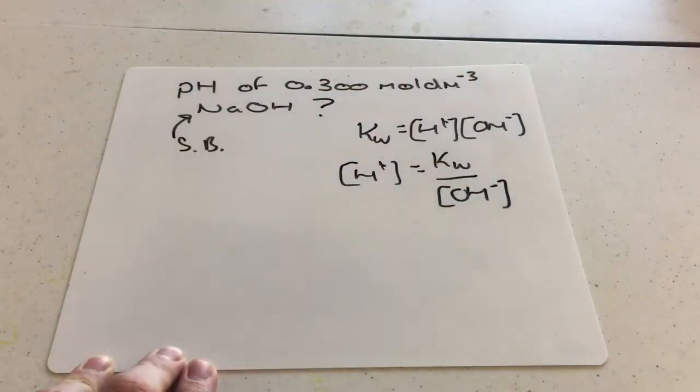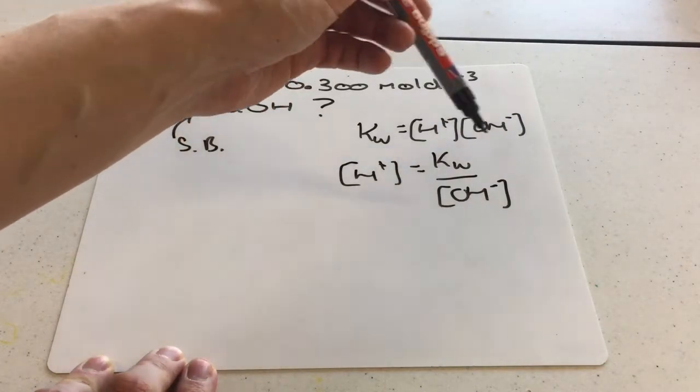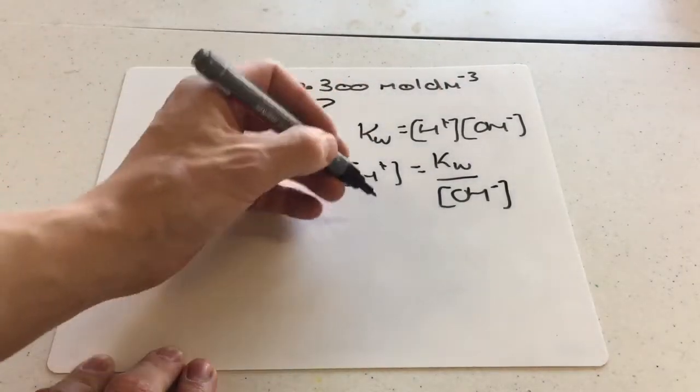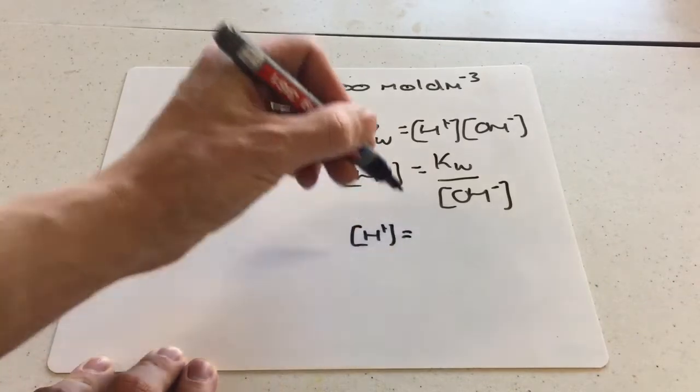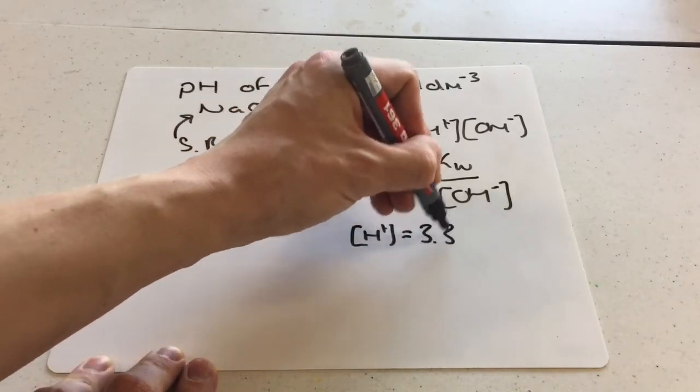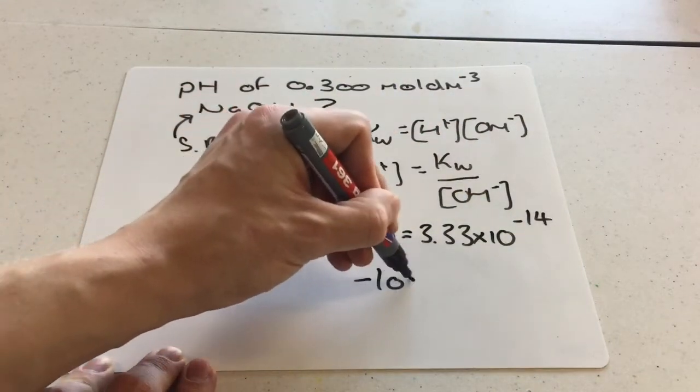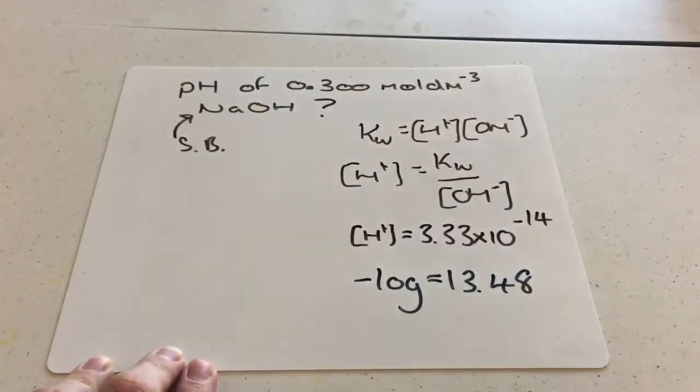If we're working at 298 Kelvin, then Kw would be 1 times 10 to the power of minus 14, and the OH minus ion concentration here would be 0.3, and that gives you a H plus ion concentration value which is going to be 3.33 times 10 to the power of minus 14, and then you do minus log of that gives you 13.48.